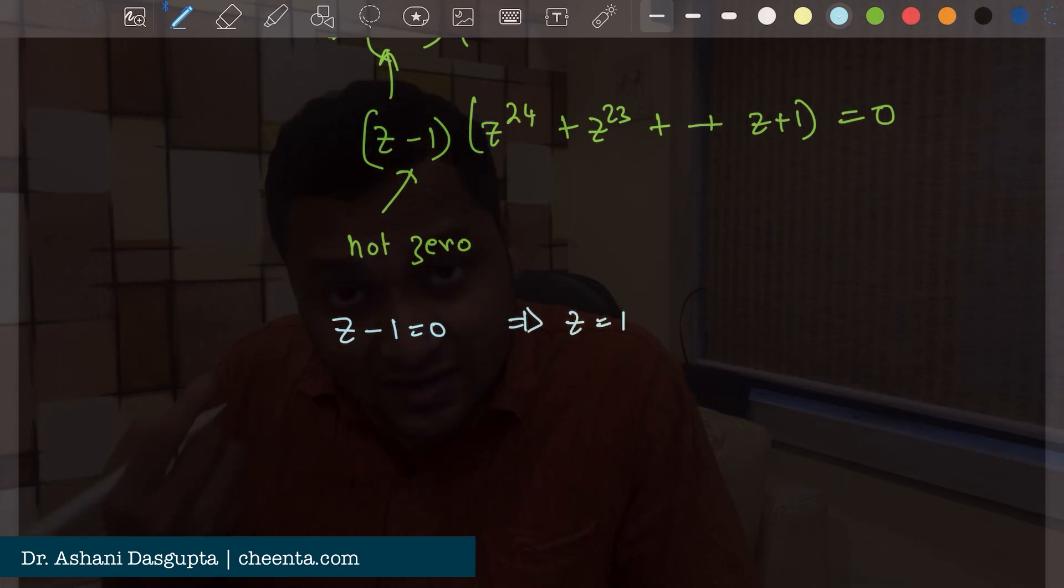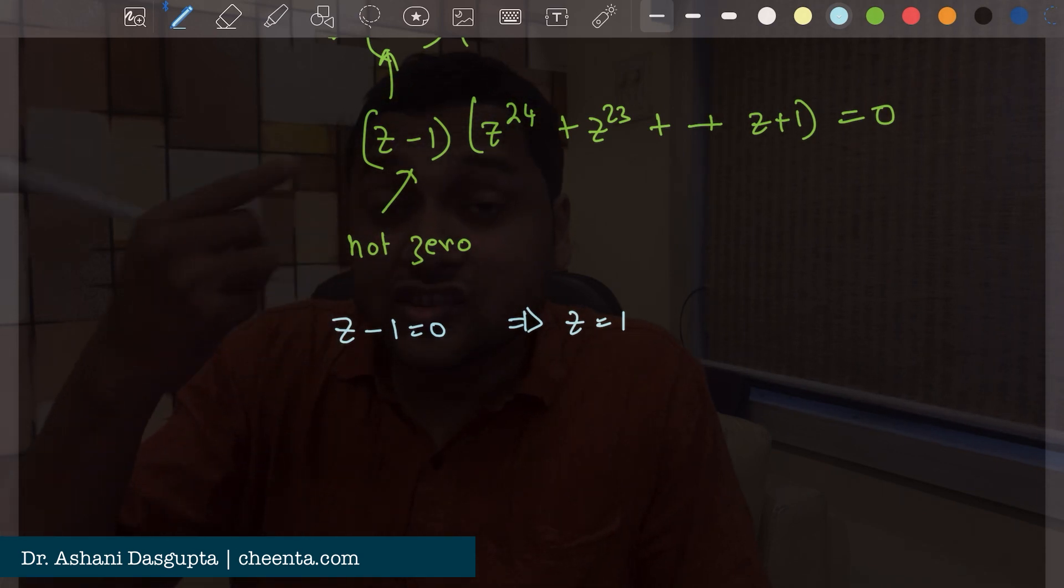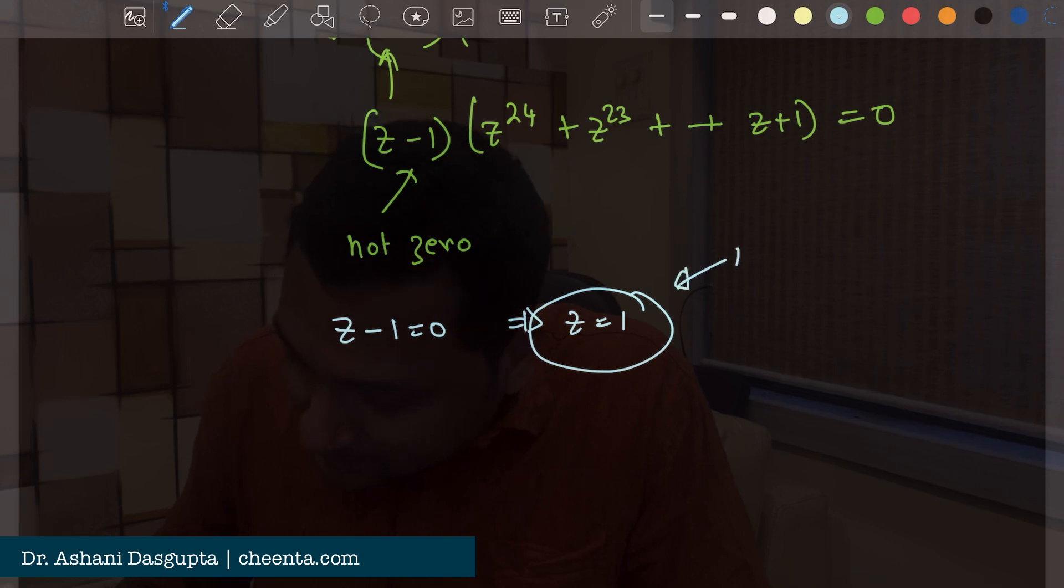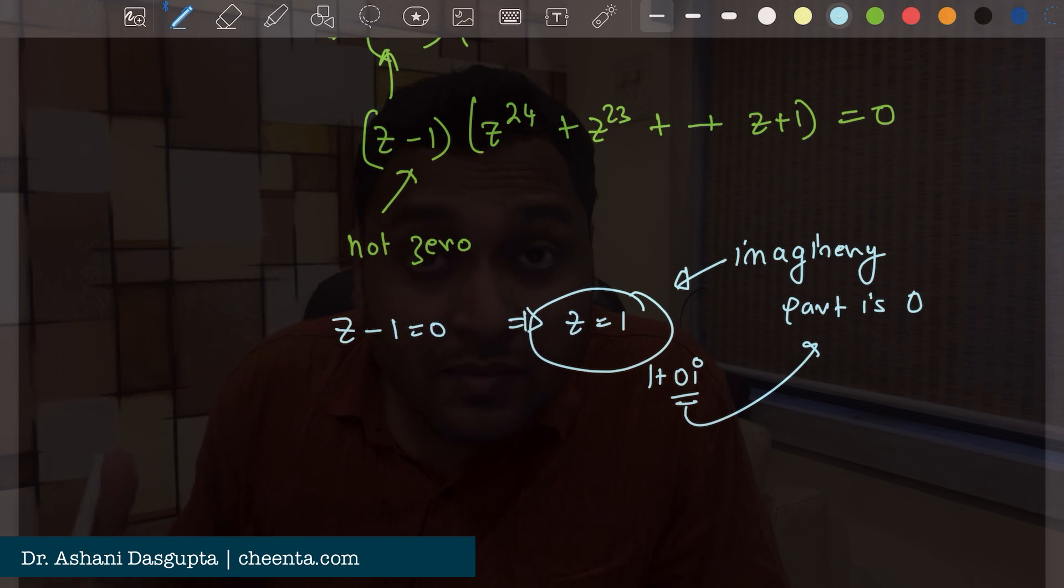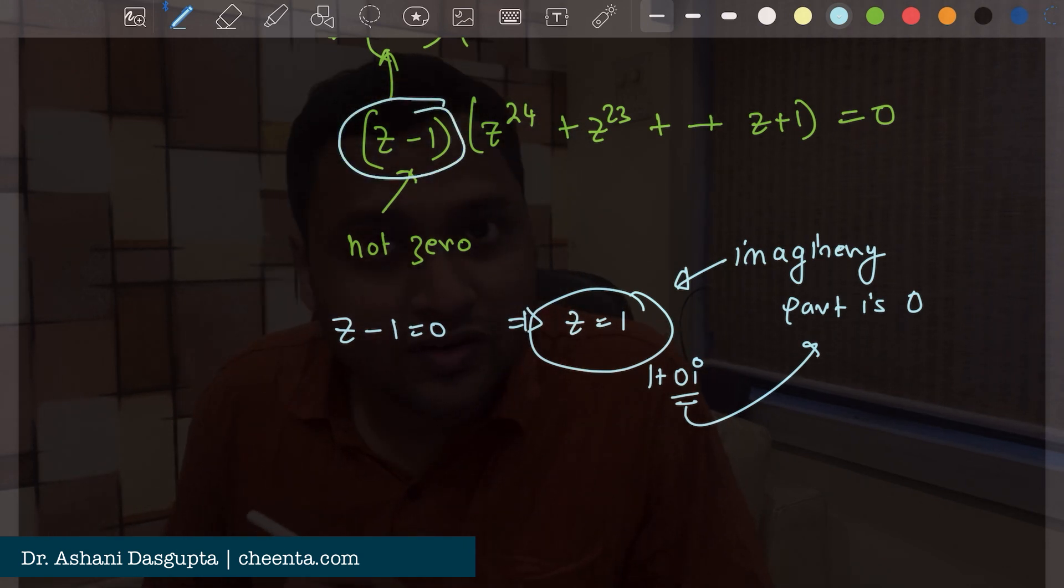Well that is also a complex number but its imaginary part is 0. Imaginary part of the complex number 1 or 1 plus 0i the imaginary part is 0. But the problem says that the imaginary part of z is not 0. So z minus 1 is not 0.